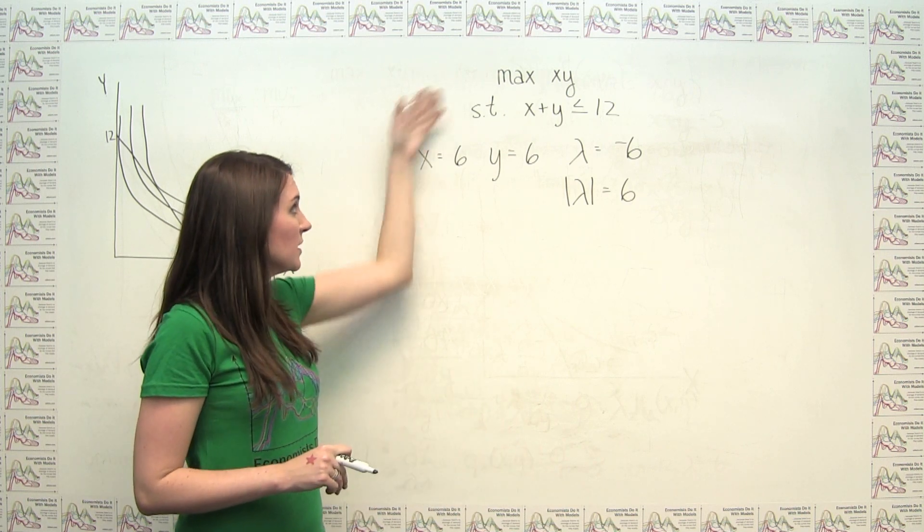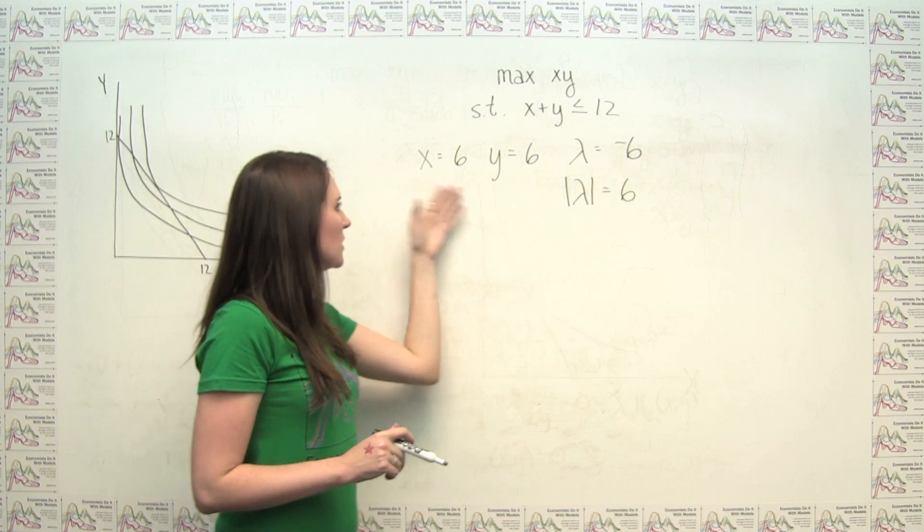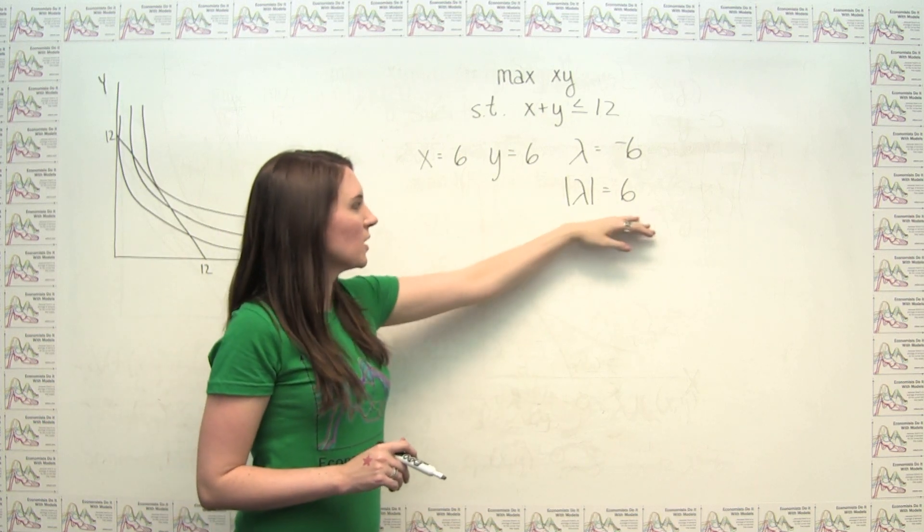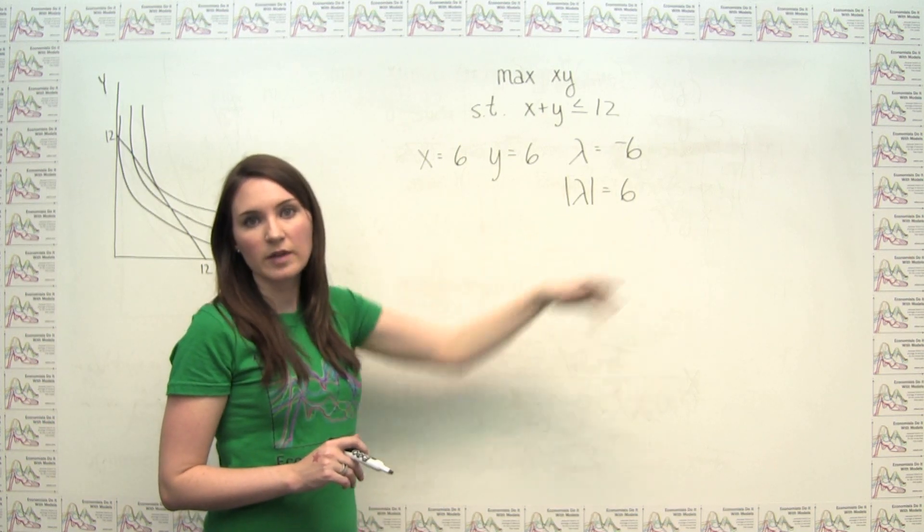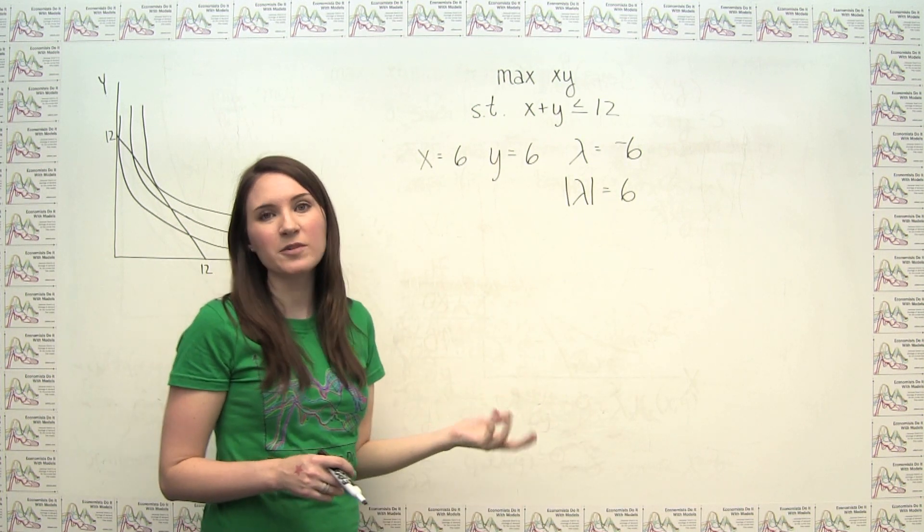So now you're done. You've done everything that you need to with this constrained optimization. You've gotten to a solution, and you've also gotten to an interpretation of your lambda or your shadow price here. So you're all good, and hopefully that wasn't too scary.